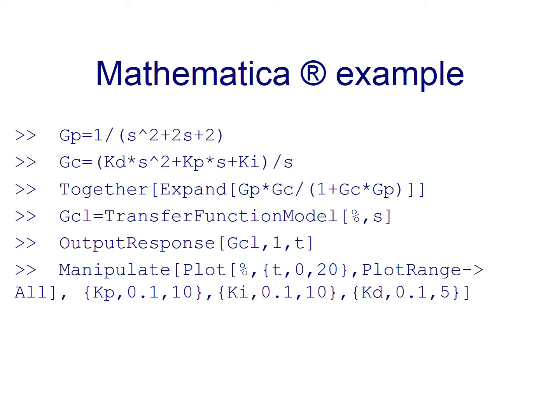Then we declare the transfer function of the PID. And for this case, we have Kd times s squared plus Kp times s plus Ki over s. As you can see, we have a couple of zeros and just one pole at the origin, which of course is due to the integral action that we are considering. Then we just simplify a little bit the closed loop expression given by Gp times Gc over 1 plus Gc times Gp.